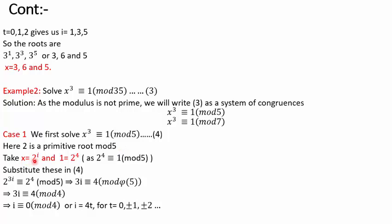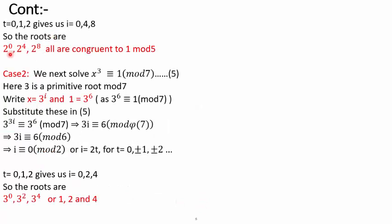We will express x as powers of 2. So we take x = 2^i and the right-hand side 1 will also be expressed as a power of 2. If you check the powers of 2 you will see 2⁴ ≡ 1 (mod 5), so you replace 1 by 2⁴. Substituting x = 2^i gives 2^(3i) ≡ 2⁴ (mod 5), which on solving gives i as a multiple of 4. Taking t = 0, 1, 2 we get i = 0, 4, 8, and the roots 2⁰, 2⁴, 2⁸ are all congruent to 1 mod 5.